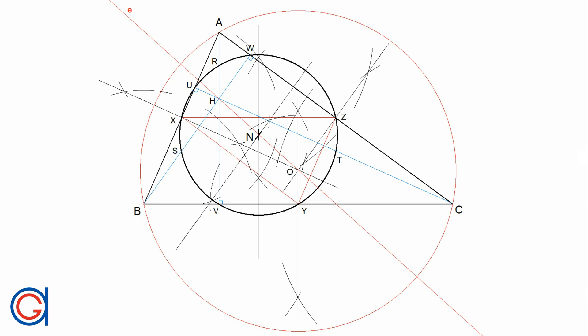The nine-point center N is on Euler's line at the midpoint of the distance between the orthocenter H and the circumcenter O, which we will show you later in the drawing. We actually only need three out of these nine points to find the nine-point center. The three points we are going to find are the three midpoints of the sides of the given triangle, which are X, Y and Z.